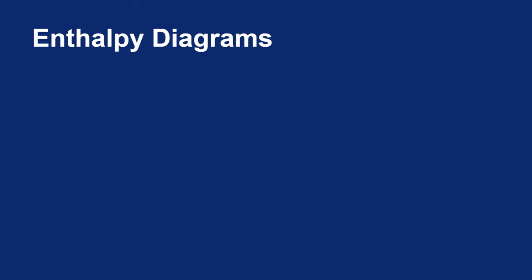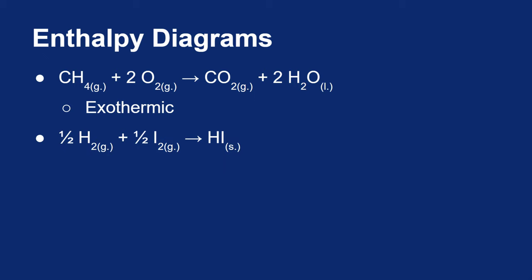Let's look at some specific reactions and diagram their changes in enthalpy. First, the combustion of methane: one mole of methane combined with two moles of oxygen creates one mole of carbon dioxide and two moles of water. We know from experience this is exothermic. Conversely, to make solid hydrogen iodide, you take half a mole of hydrogen and half a mole of iodine to make one mole of HI. This process is endothermic.